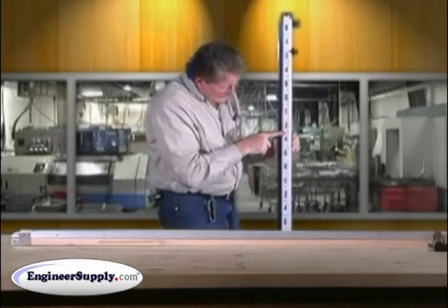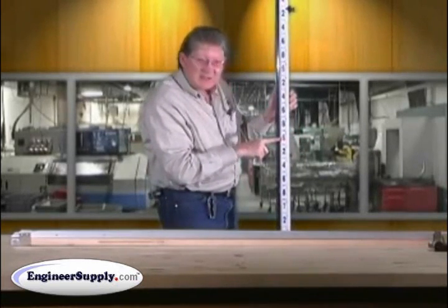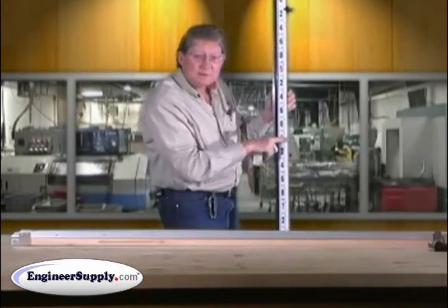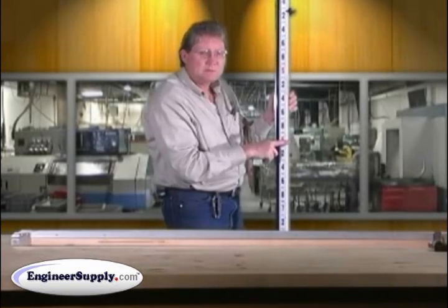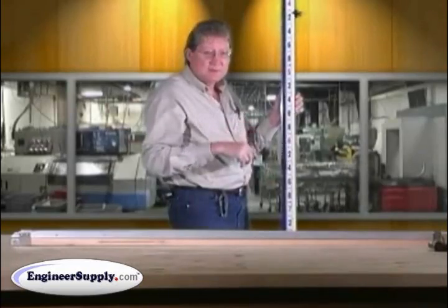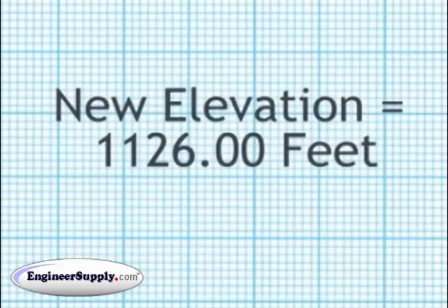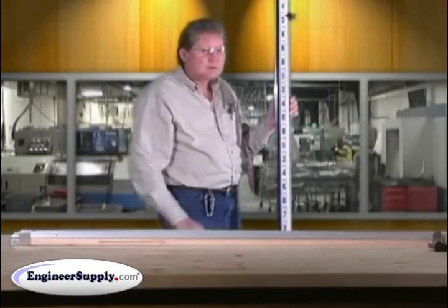Now as you move up, see, now you are reading 6.00. So your last three digits would be 6.00. So your elevation would be 1,126.00 feet.